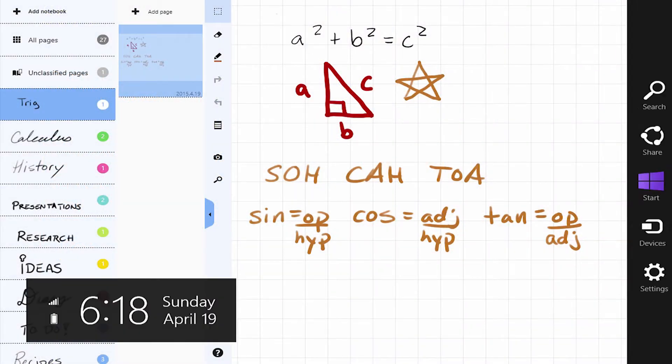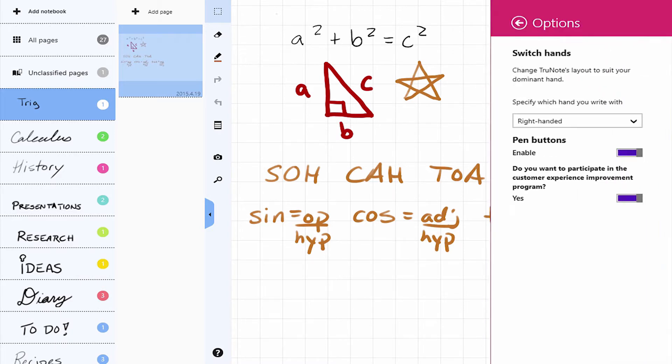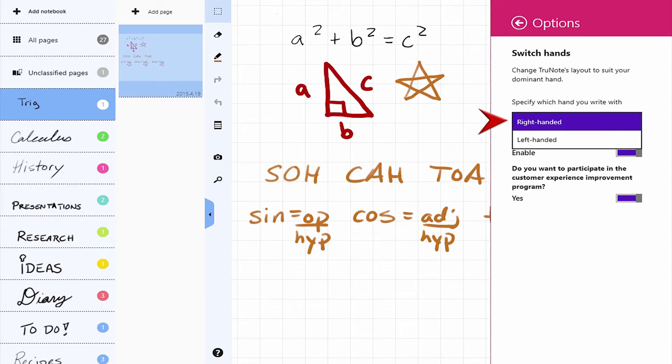You just swipe it from the right, select Settings, and then choose Options. Now you can change this drop-down list with right-handed or left-handed, and set it with whatever hand you write with.